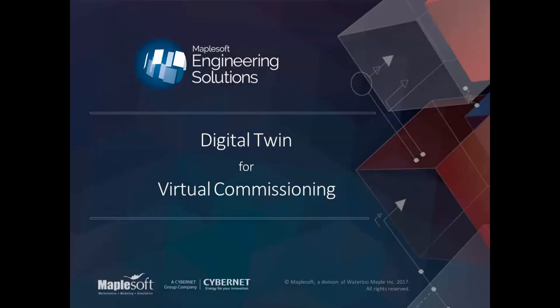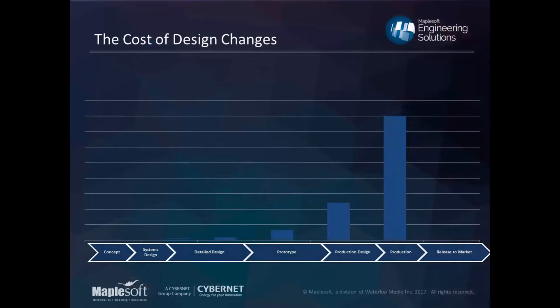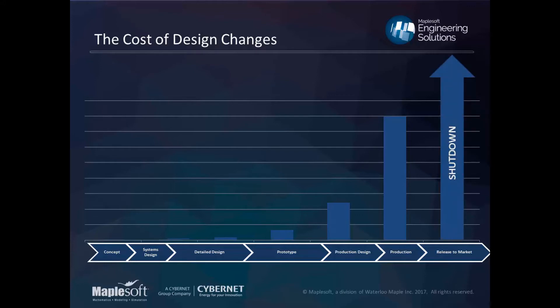Hi, my name is Graham Jackson and I'm an engineering specialist at Maplesoft. Today I want to talk about digital twin for virtual commissioning. Why do we care about virtual commissioning? It all comes down to the cost of design changes. The graph here is a set of numbers you can associate to your own company, but the idea is that as you get farther along the design process into prototyping and product design, it gets more and more expensive — probably exponentially so — to make changes.